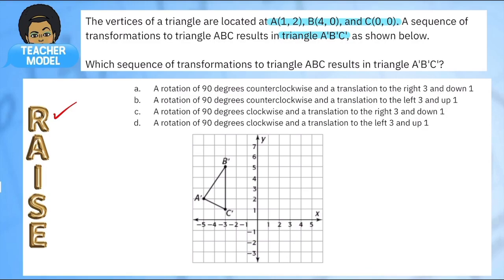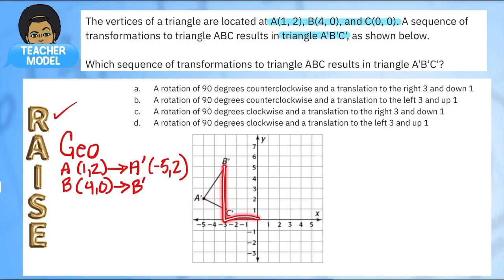So we want to figure out what is the sequence that created that image. So we've read our question. We're assigning this to geometry and we have a series of points. So I know that point A went from (1, 2) and it was transformed to (-5, 2). And I know point B went from (4, 0) to B prime, and I'm finding B prime just by looking at the points here. So B prime is at (-3, 5).